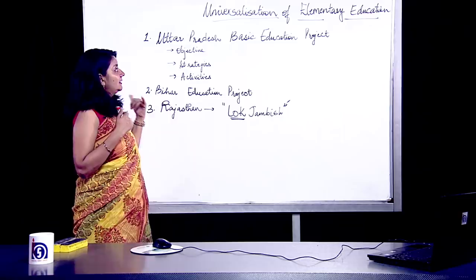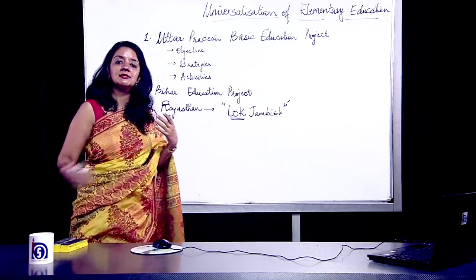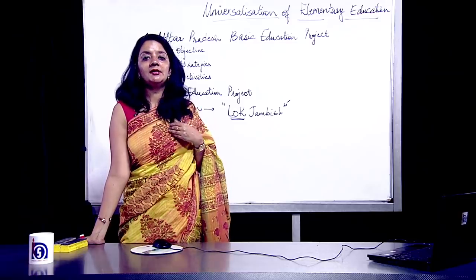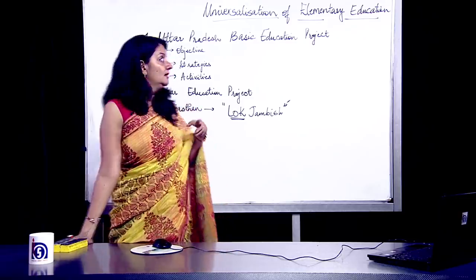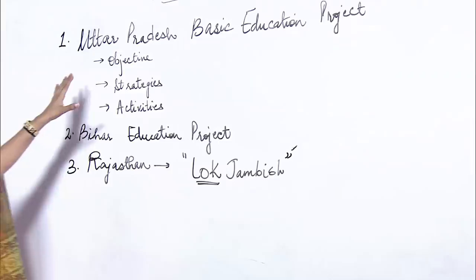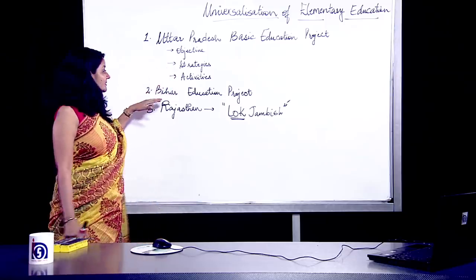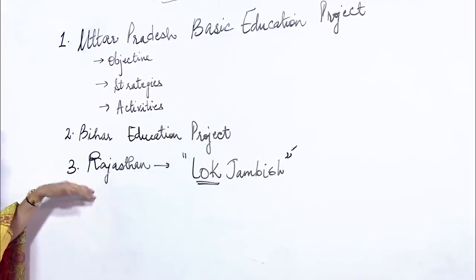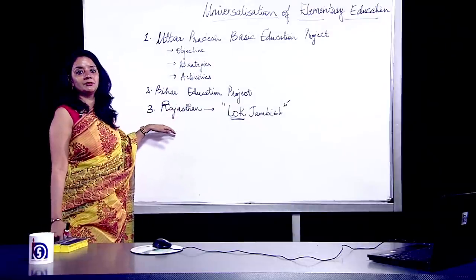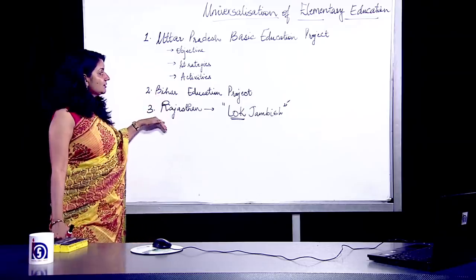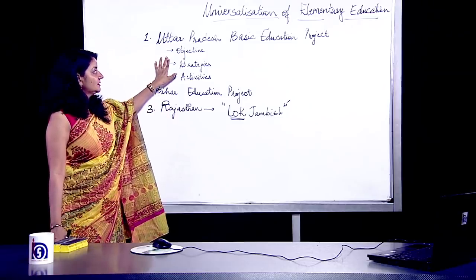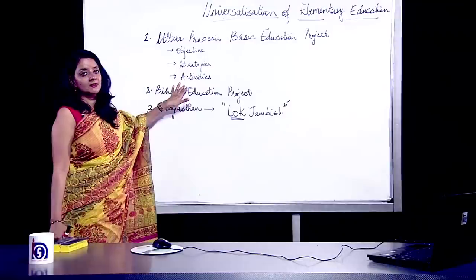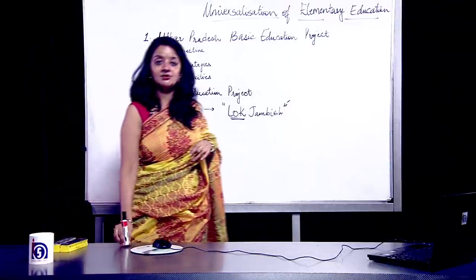Today we discussed universalization of elementary education and its meaning. We then discussed three projects: the first was the Uttar Pradesh Basic Education Project, the second was the Bihar Education Project, and the third was the Lok Jambish project from Rajasthan. For all three projects we studied their objectives, strategies, and activities. I hope the session was clear. Thank you so much.